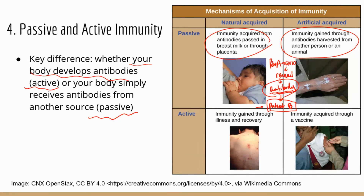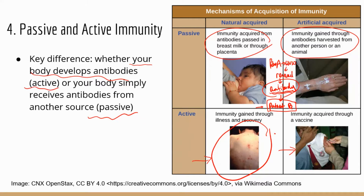Examples of active immunity: if you've been exposed to a pathogen, naturally your body will make antibodies — that's active immunity. Another example is vaccination. Once you receive a vaccine, your body makes antibodies in response because the vaccine usually contains inactivated or dead pathogen, which works as an antigen. So your body is exposed to the antigen and produces antibodies.